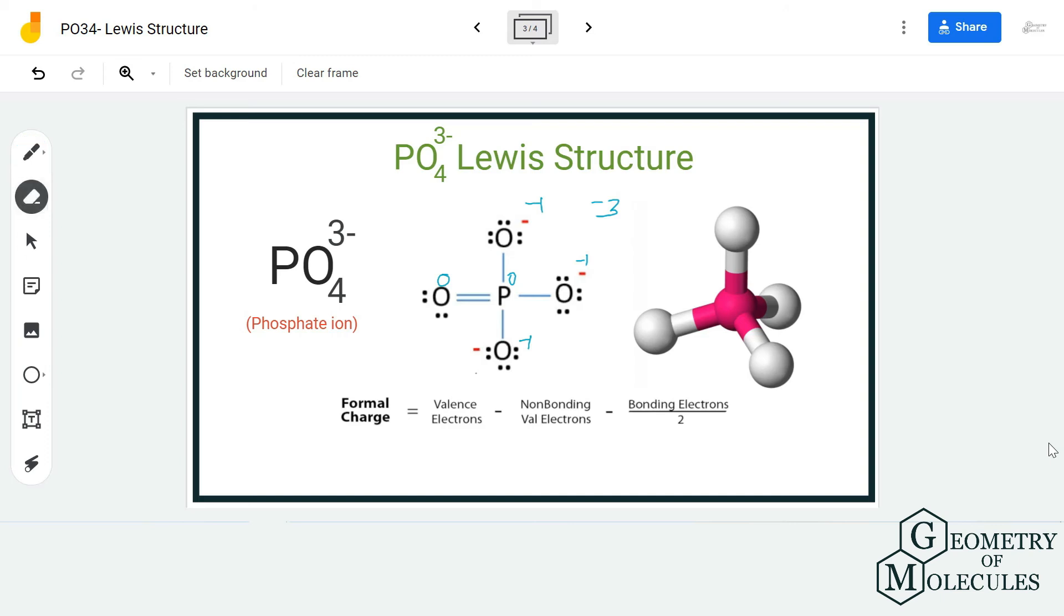Now this is the Lewis structure of PO₄³⁻, as these three oxygen atoms have -1 charge and both this oxygen and phosphorus atom have zero formal charges. So this is the Lewis structure for PO₄³⁻.